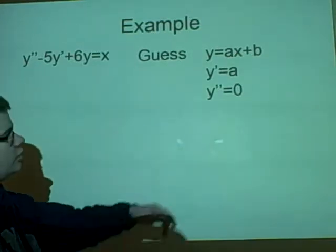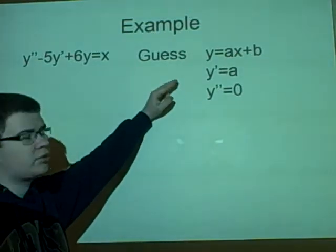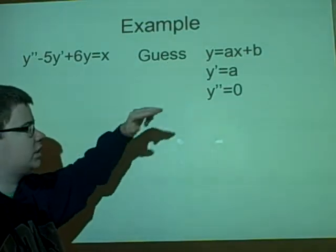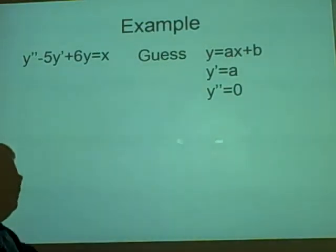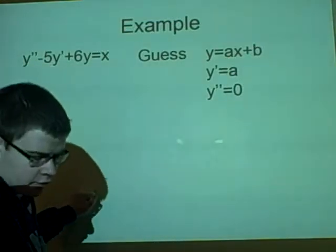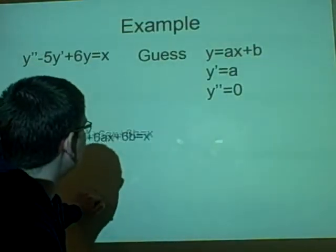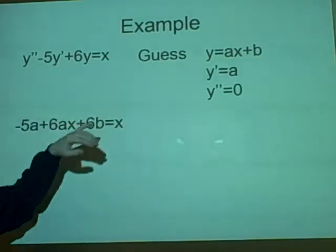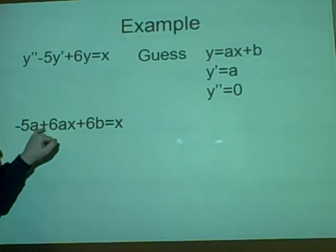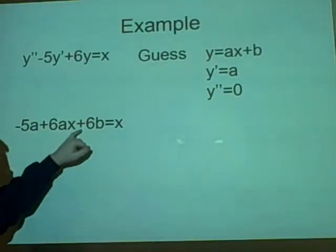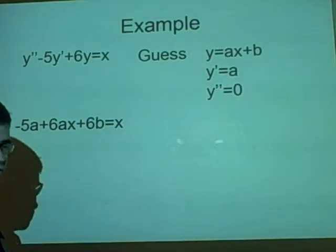So we'd differentiate to get y'=a, differentiated again to get y''=0. And then we'd put these into here. We'd put these into here, and I've just simplified it a bit. So we would get -5a+6ax+6b=x.